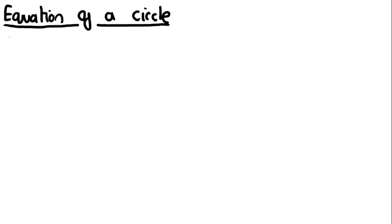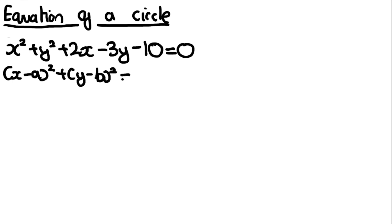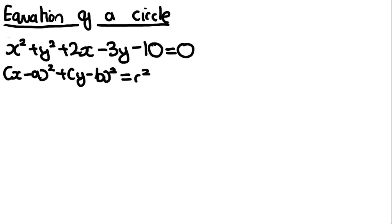They could also give you the equation of the circle in expanded form. For example: x squared plus y squared plus 2x minus 3y minus 10 equals 0. This isn't very useful as we can't extract the center or the radius directly. But we can put it into the form x minus a, squared, plus y minus b, squared, equals r squared by completing the square separately on x and y.